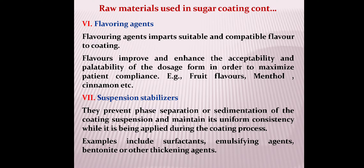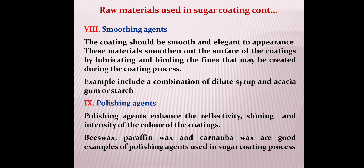Flavoring agents impart suitable and compatible flavor to the coating, improving acceptability and palatability of the dosage form to maximize patient compliance. Examples include various fruit flavors, menthol, cinnamon, and others. Suspension stabilizers prevent phase separation or sedimentation of the coating suspension, maintaining uniform consistency during application. Examples include surfactants, emulsifying agents, bentonite, and other thickening agents. Smoothening agents smoothen out the coating surface by lubricating and binding fines during the coating process. Examples include combinations of dilute syrup and acacia gum or starch.